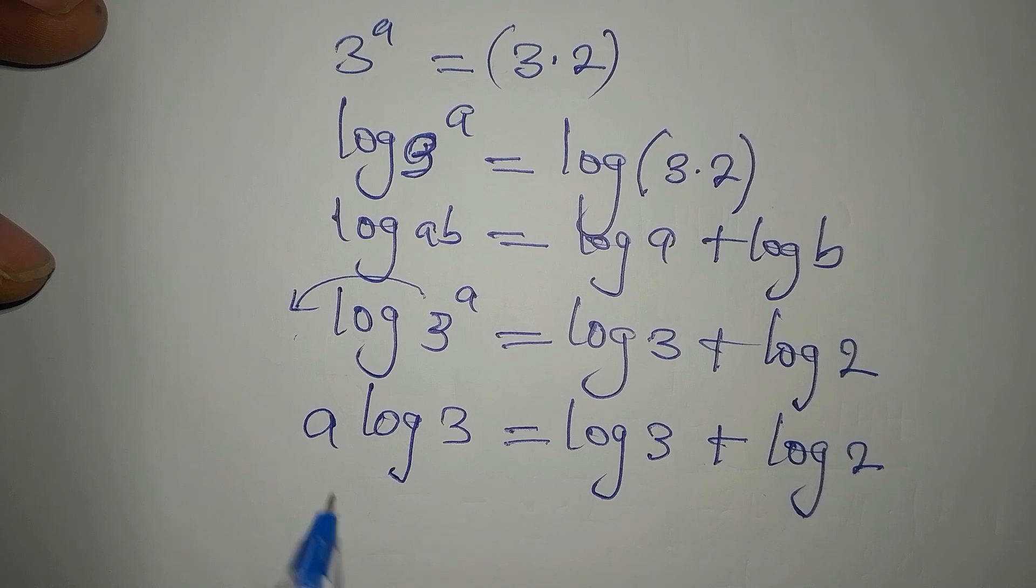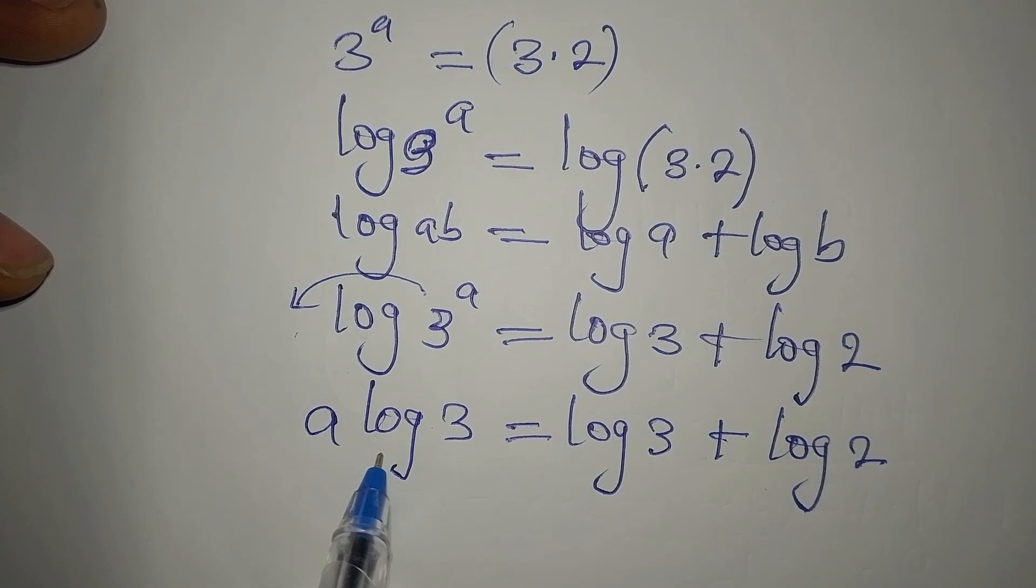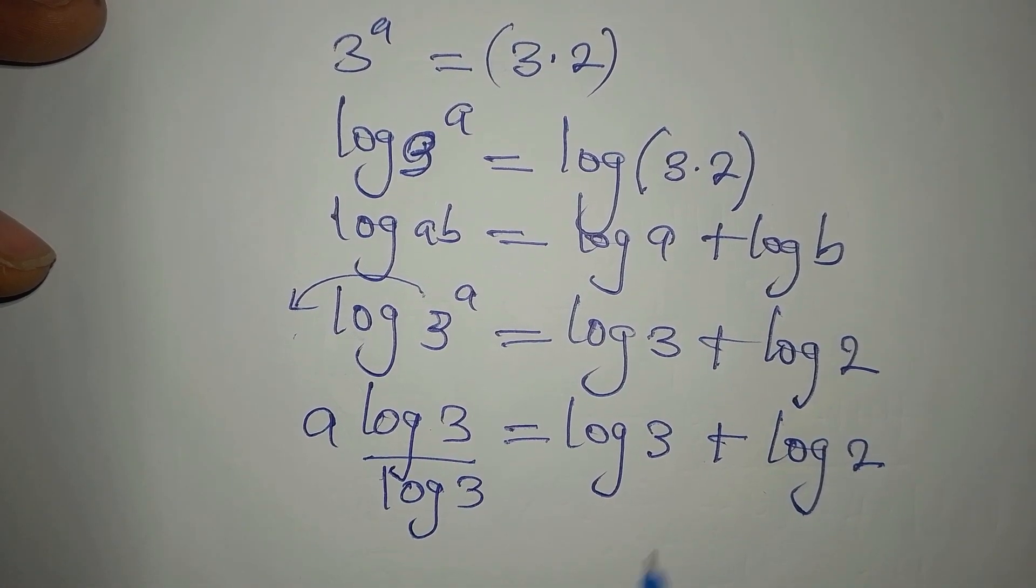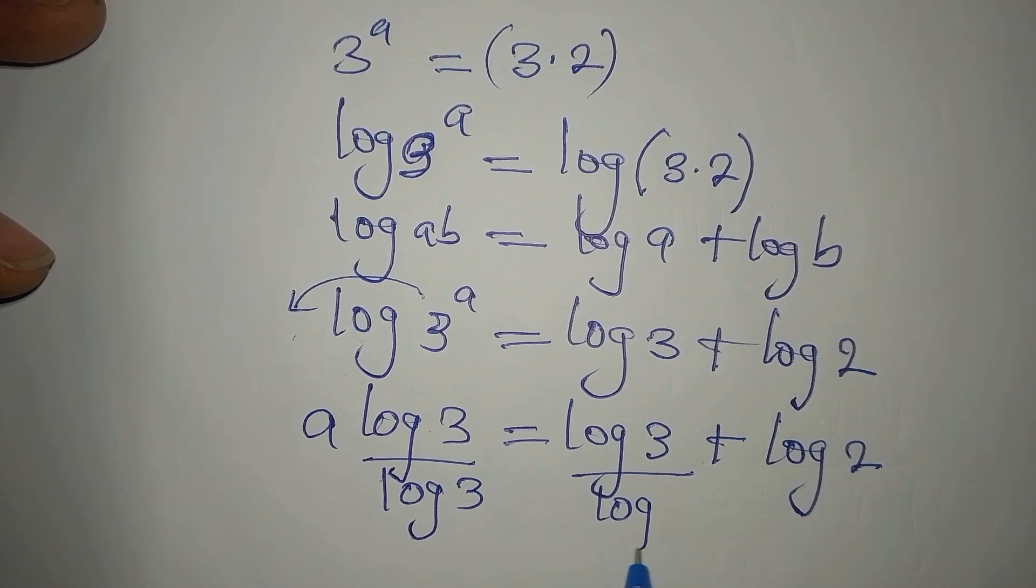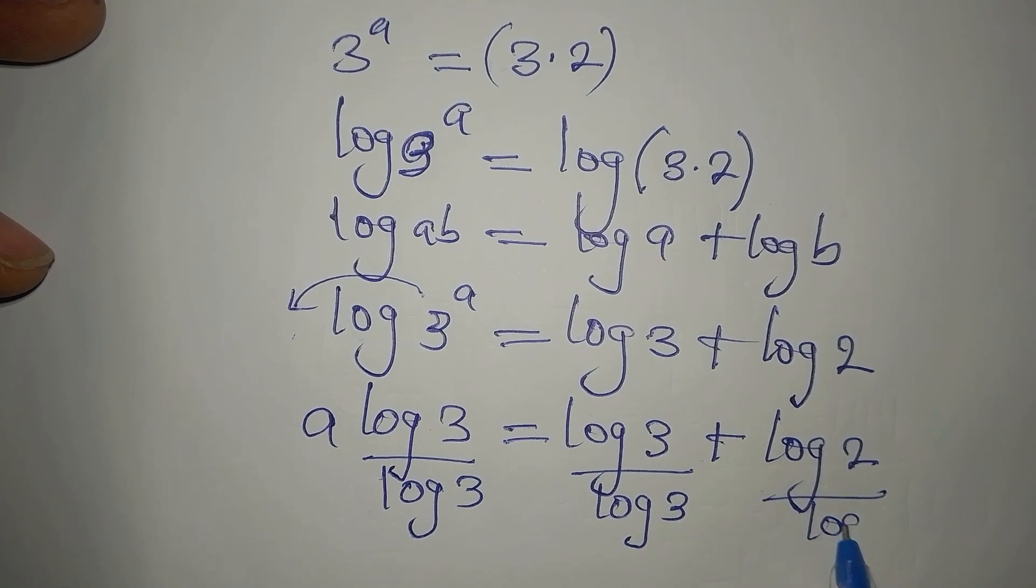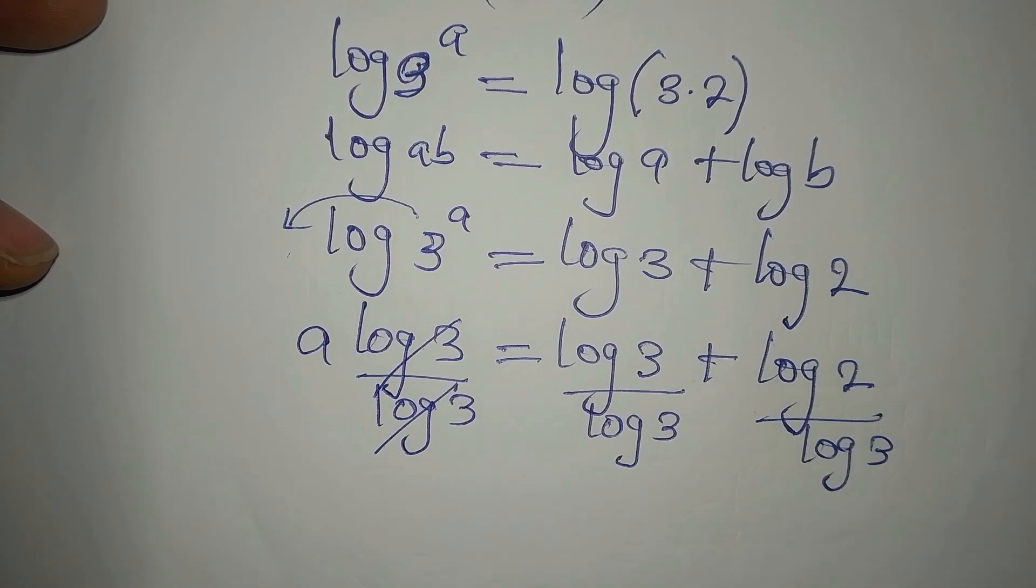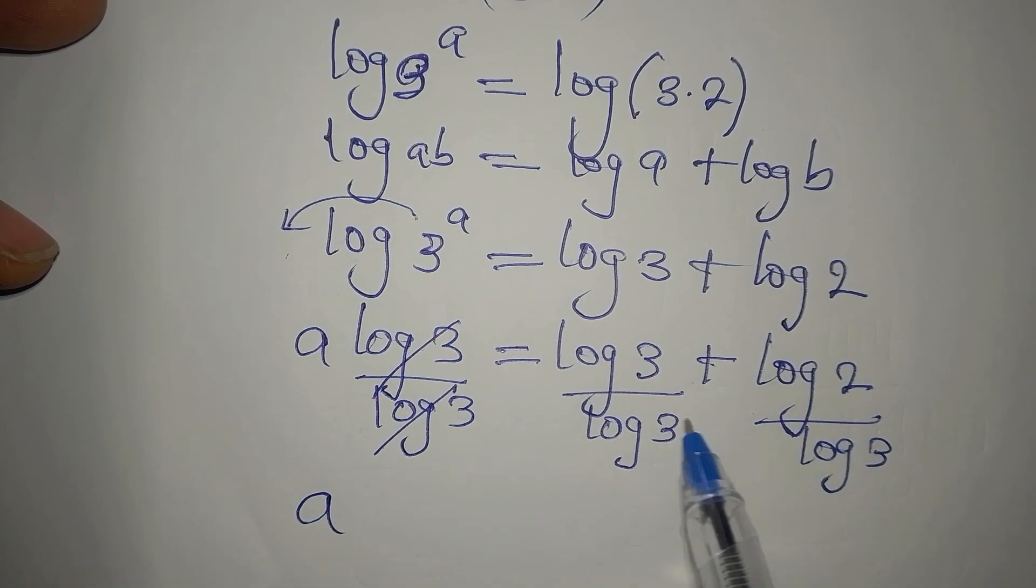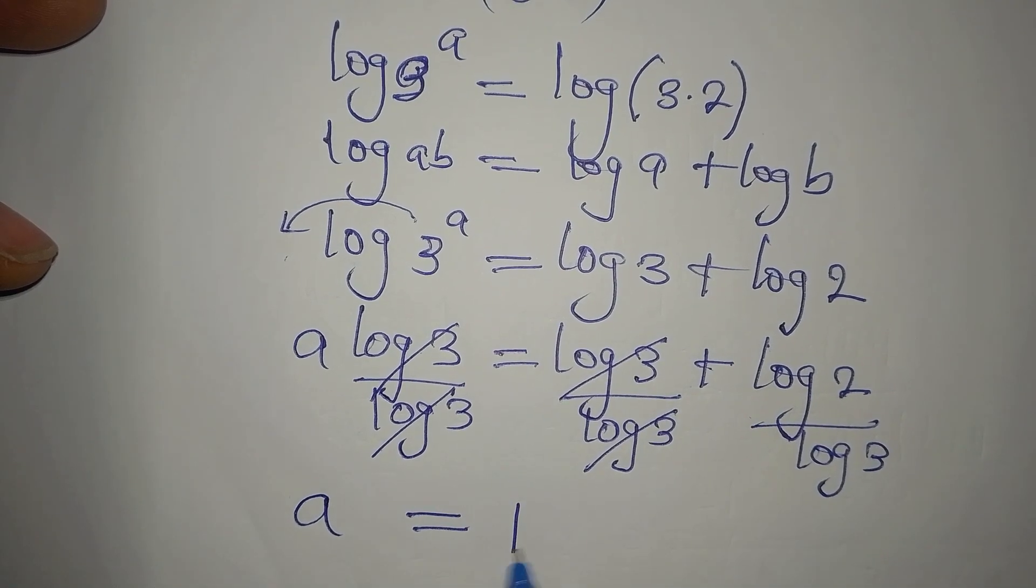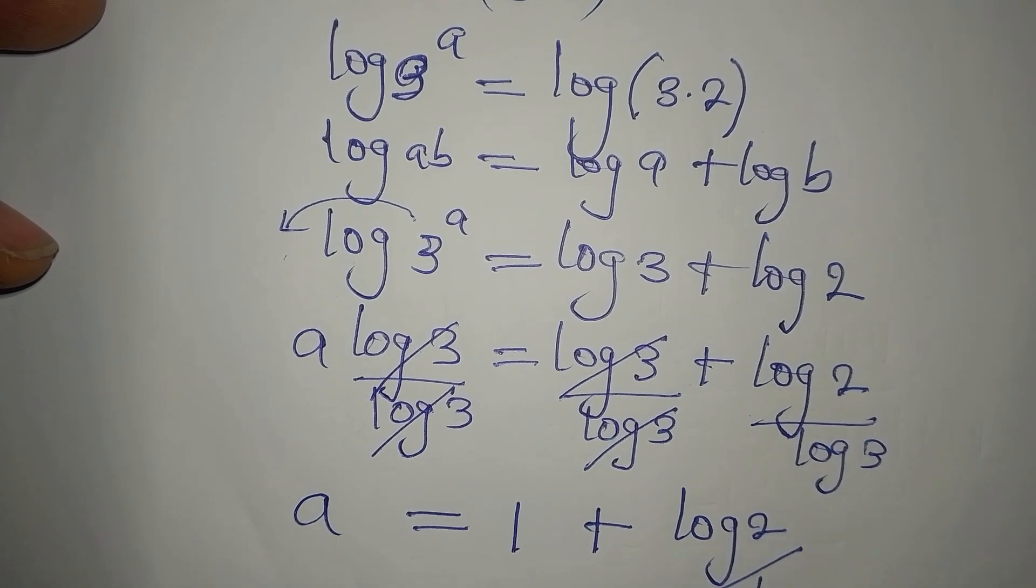Now, we are looking for a, so we need to remove this. And since we are multiplying both of them, to remove is to divide by what you want to remove. So we divide this by log 3. The same thing here should appear here and there. So we have log 3 here. This can go there. So we are going to have a. Then this goes there again, so that we have 1 plus log 2 divided by log 3.